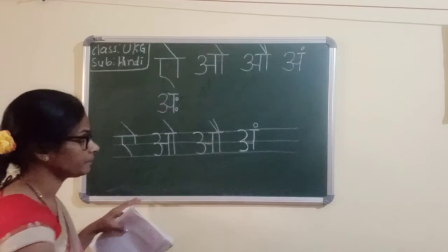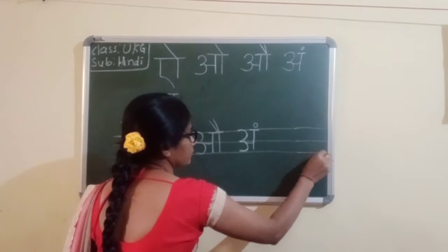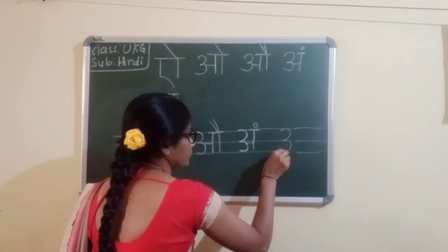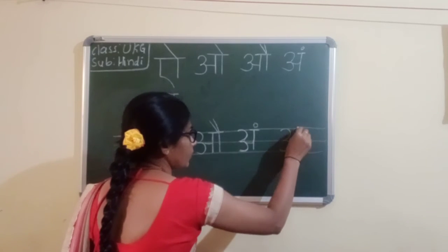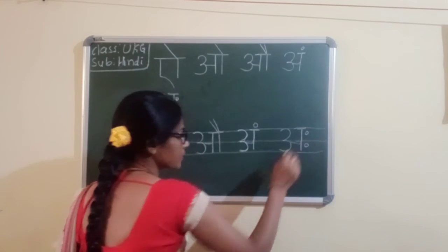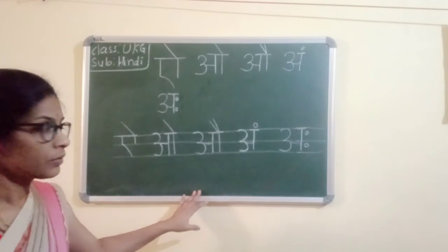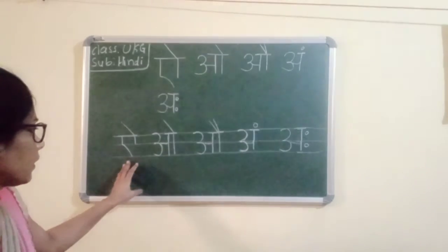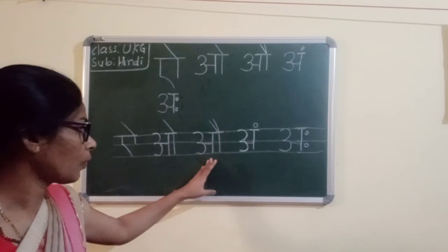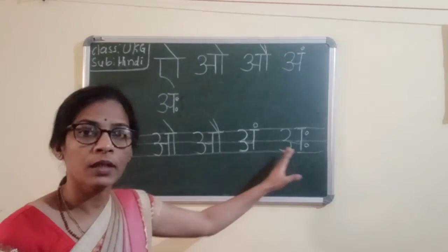And next one — Aha. You write here smart zero. This is called Aha. I, O, Au, Um, Aha.